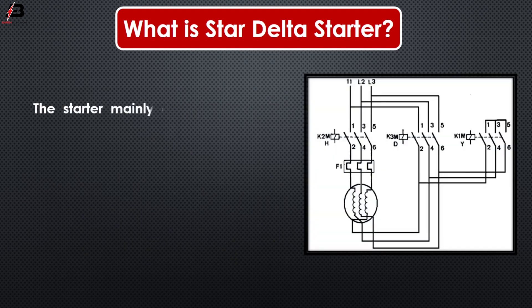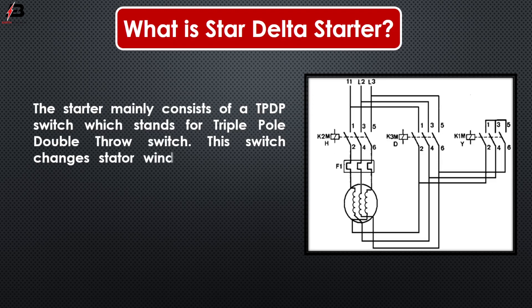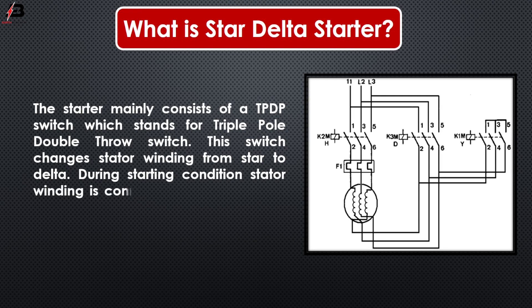The starter mainly consists of a TPDP switch, which stands for triple pole double throw switch. This switch changes the stator winding from star to delta. During the starting condition, the stator winding is connected in the form of a star.